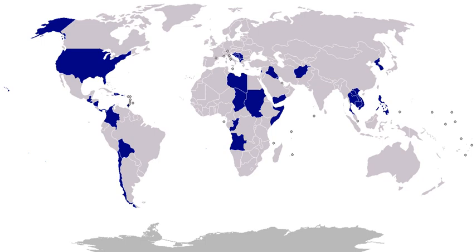1917–1922, Cuba: U.S. forces protected American interests during insurrection and subsequent unsettled conditions. Most of the United States armed forces left Cuba by August 1919, but two companies remained at Camagüey until February 1922. 1918–1919, Mexico: after withdrawal of the Pershing Expedition, U.S. troops entered Mexico in pursuit of bandits at least three times in 1918 and six times in 1919. In August 1918, American and Mexican troops fought at Nogales, Battle of Ambos Nogales. The incident began when German spies plotted an attack with Mexican soldiers on Nogales, Arizona. The fighting began when a Mexican officer shot and killed a U.S. soldier on American soil. A full-scale battle then ensued, ending with a Mexican surrender.